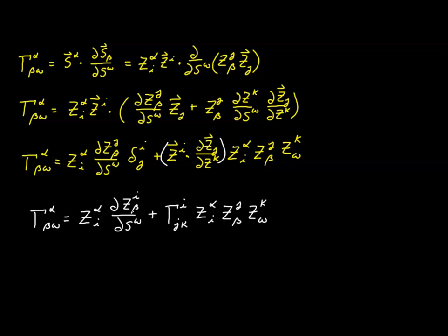This gives us an expression that allows us to use the known Christoffel symbol values in the ambient space together with the shift tensors to derive Christoffel symbols in the surface geometry. One important note: if Z_i is an affine coordinate system, all the ambient Christoffel symbols are zero, so the second term drops out and only the first term remains, giving a simplified conversion formula.